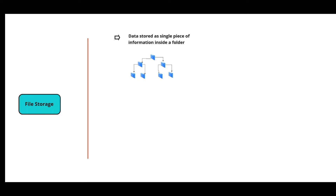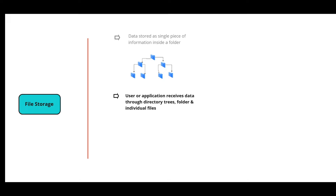In file storage, data is stored as a single piece of information inside a folder. When you need to access that data, your computer needs to know the path to find it, and the user or application receives data through directory trees, folders, and individual files. It is analogous to network-attached storage, or NAS, which enterprises use to store files shared by multiple systems.